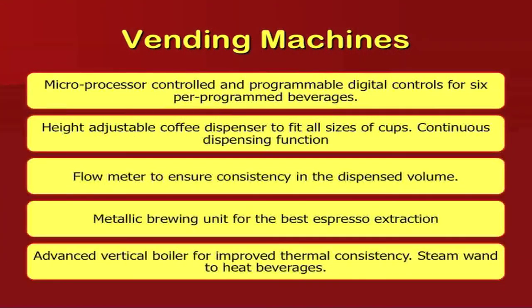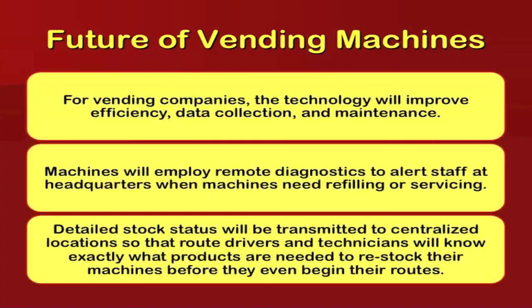Vending machines are microprocessor-controlled with programmed digital controls for beverages. They feature a highly adjustable coffee dispenser to fit all cup sizes and continuous dispensing functions. A flow meter ensures consistency in dispensed volume. The metallic brewing unit is best suited for espresso extraction. An advanced vertical boiler provides improved thermal consistency, and a steam wand heats the beverages. The microprocessor controls all functions, the dispenser maintains consistency, and the boiler regulates temperature to vent coffee at the desired level.